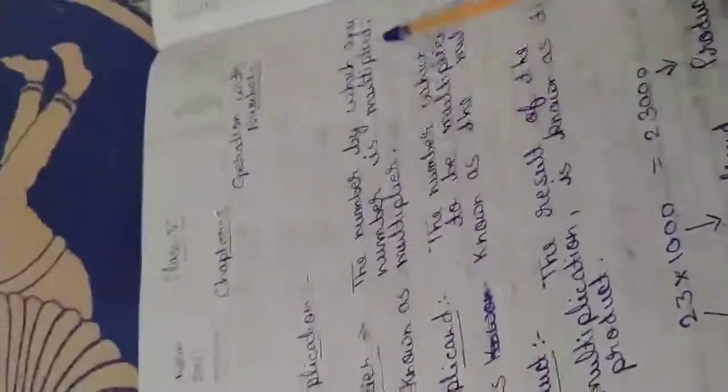In multiplication, there are three terms: Multiplier, Multiplicand, and Product. What is Multiplier? The number by which any number is multiplied is known as Multiplier.